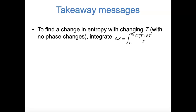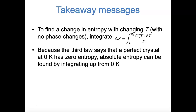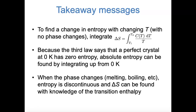Just a few takeaway messages from this video. First, assuming no phase changes, we can find the change in entropy with changing temperature by integrating the heat capacity over the temperature. The third law of thermodynamics tells us that a perfect crystal at absolute zero has zero entropy, which means we can find the absolute entropy at any temperature by integrating up from absolute zero. And when phase changes are involved, the entropy is discontinuous, and we need transition enthalpies and the temperatures of phase transitions to find the entropy changes. In the next video, we'll look at how these ideas apply to the entropy of atoms, molecules, and reactions.